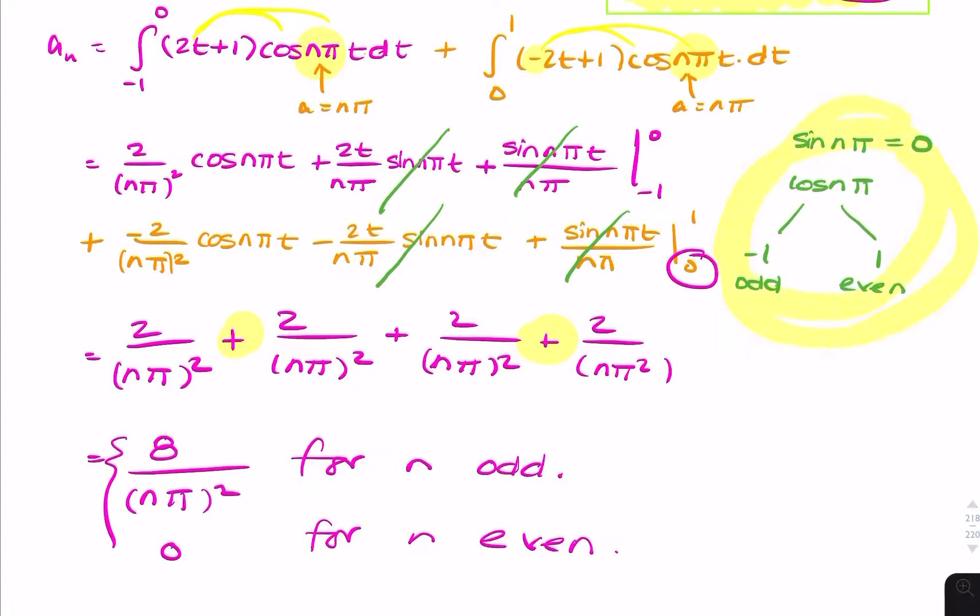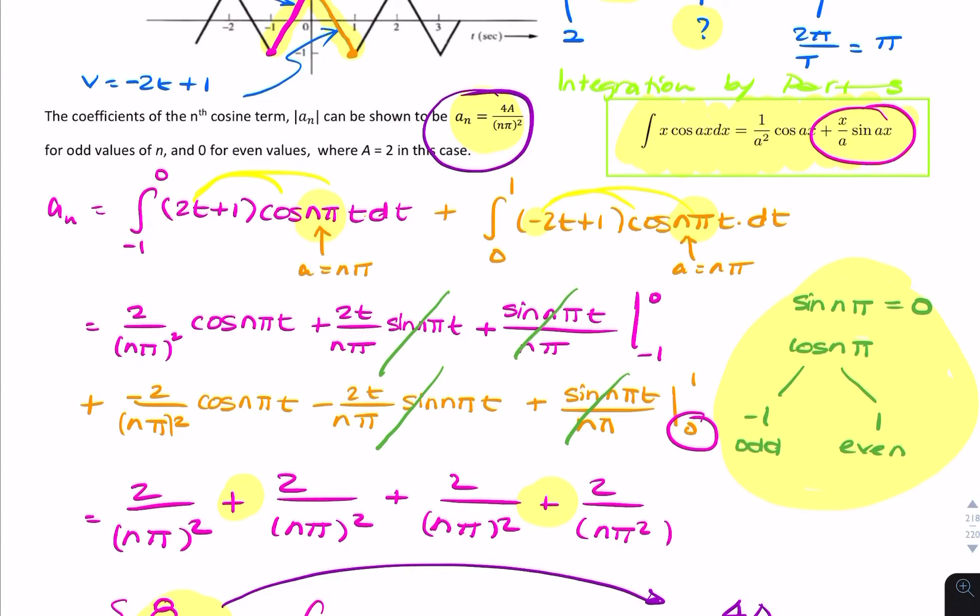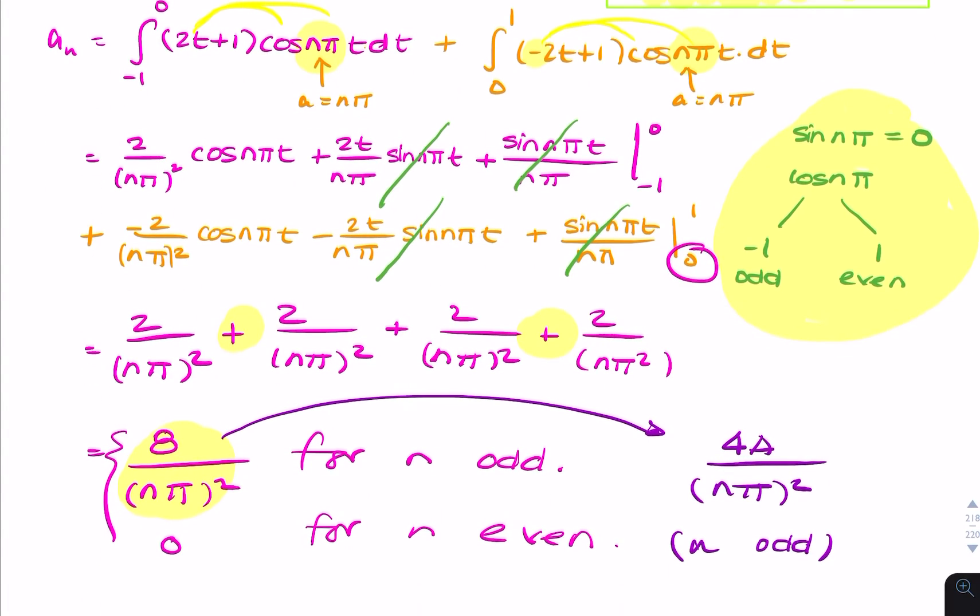And that's because of that, because cosine n pi is 1 for even values of n. So this is my final expression. This is what the questioner is actually asking you to find. So we can actually say that this expression can be rewritten as 4a over n pi squared for n odd. And that's what the question here was asking you to find. So that is your final answer for this clarification.